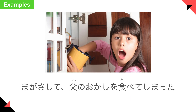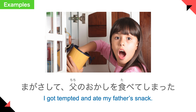Next example sentence: 間がさして父のお菓子を食べてしまった。 I got tempted and ate my father's snack. 間がさす means to get tempted — maybe tempted by an evil spirit. 父のお菓子 means my father's snacks. 食べてしまった means I ate it — like it was kind of an accident; I knew I really shouldn't do it, but I did it anyway.